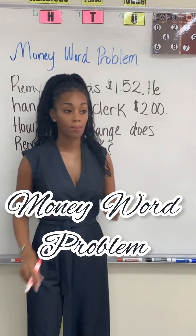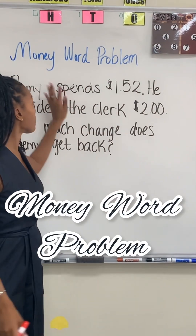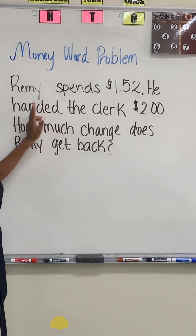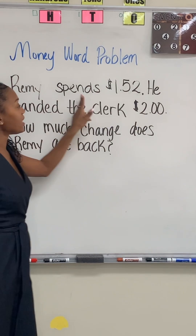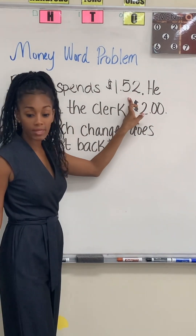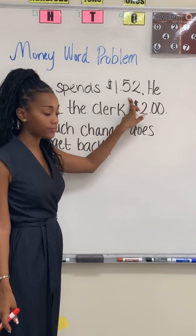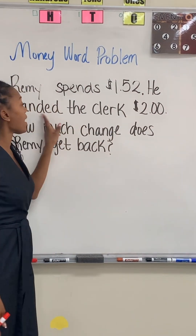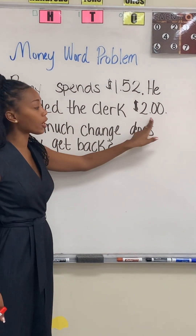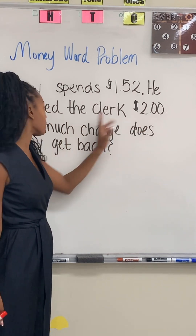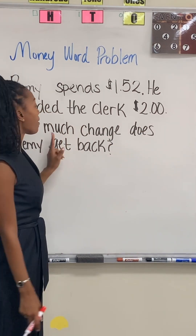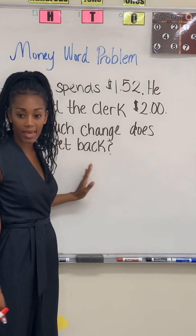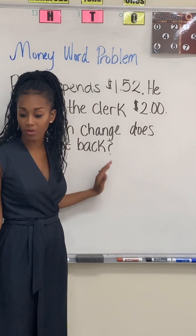Today we're going to be doing a money word problem. Let us read it together. Remy spends $1.52. He handed the clerk $2. How much change does Remy get back?